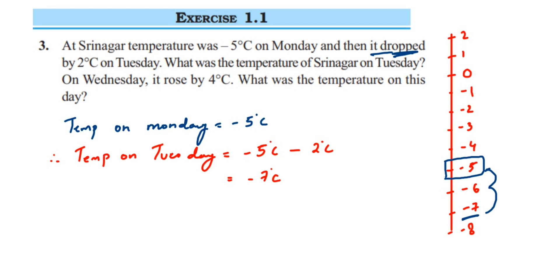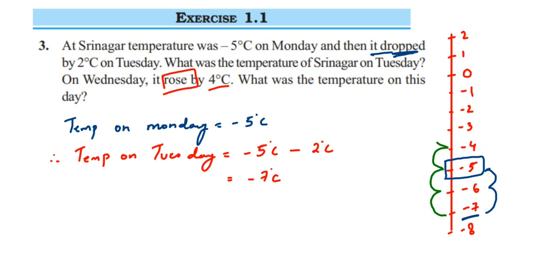The next question: on Wednesday it rose by 4 degrees Celsius. Rose means it increased, so we have to add 4 degrees Celsius. On the number line, the temperature on Tuesday is minus 7. Increasing means going up 4 units: 1, 2, 3, 4 — stopping at minus 3. So the temperature on Wednesday will be minus 3 degrees Celsius.